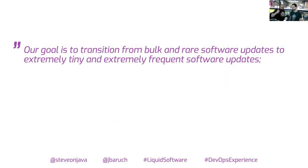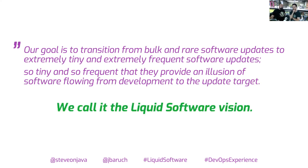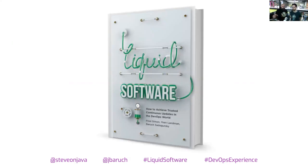Our goal is to transition from bulk and rare software updates to extremely tiny and extremely frequent software updates — so tiny and so frequent they provide an illusion of software flowing from development to the update target. We call this the Liquid Software Vision. Two of the co-founders of JFrog, Fred Simon and Yoav Landman, and myself wrote a book about it, covering all the concepts of continuous updates, practical examples, and how to build software your users will trust.